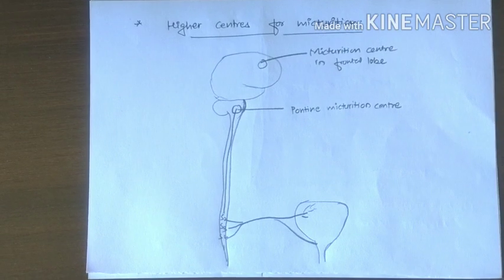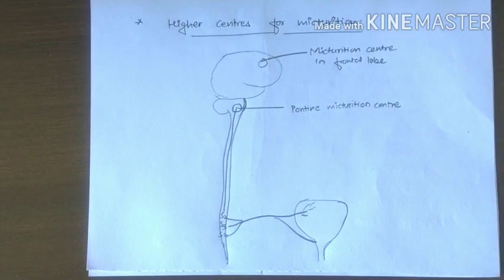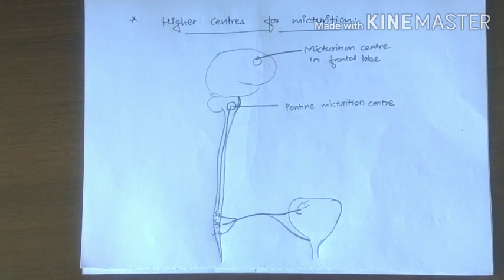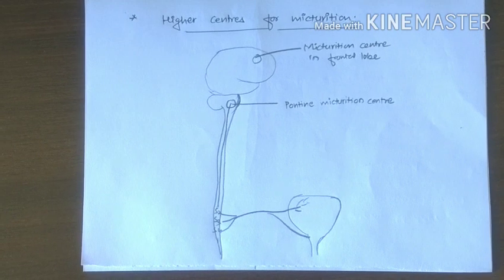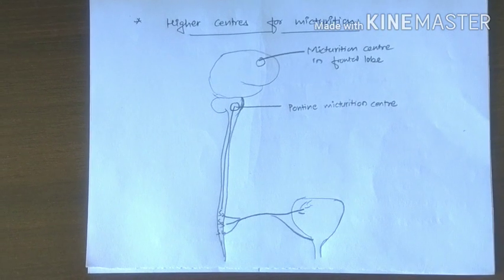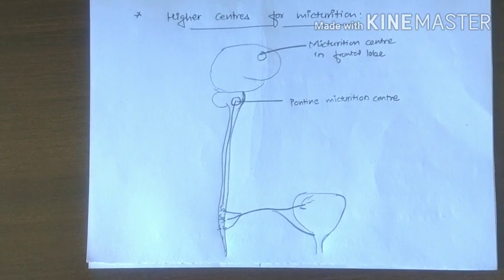Suprapontine centers relay their influence on sacral micturition centers through the pontine micturition center. These centers are present in the cerebral cortex, basal ganglia, and limbic system.